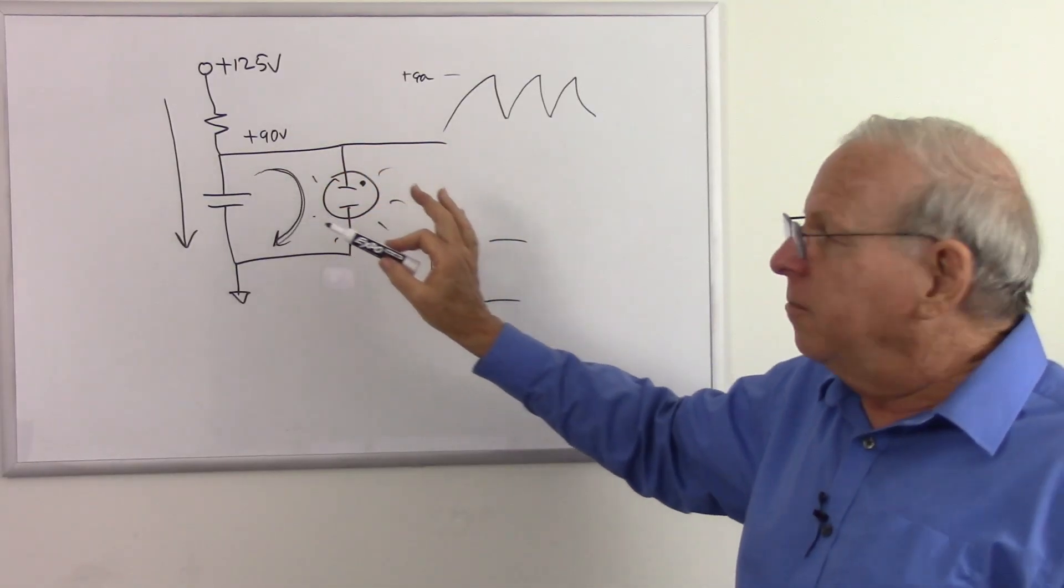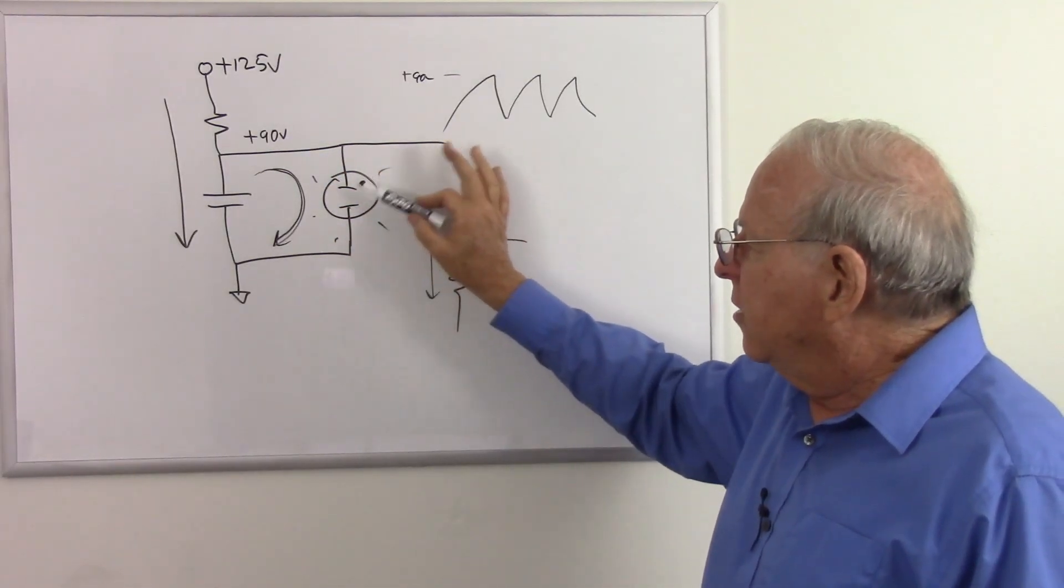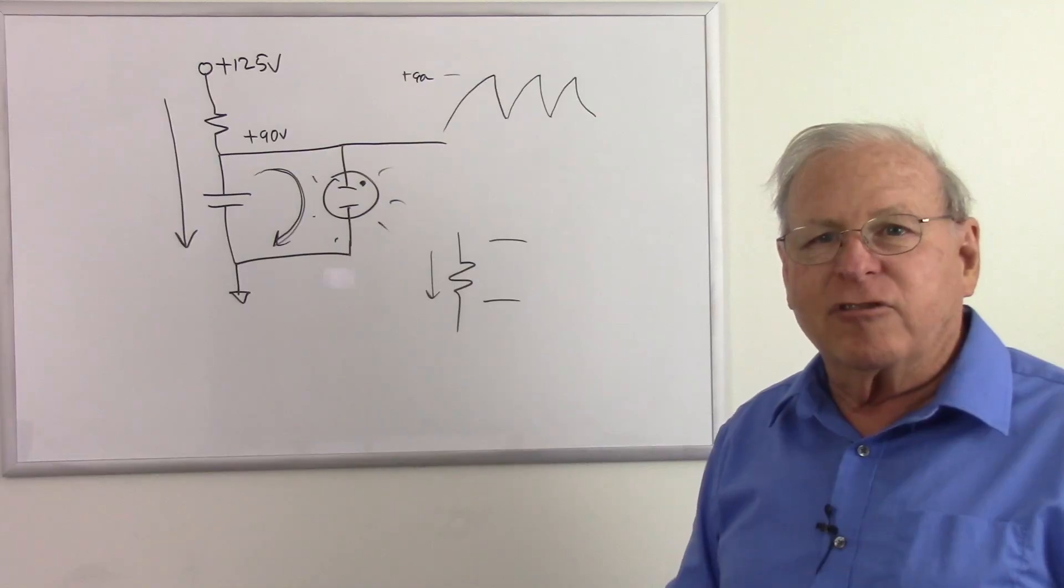So that may be the simplest oscillator you can build, is using a neon discharge tube to make a very simple relaxation oscillator.